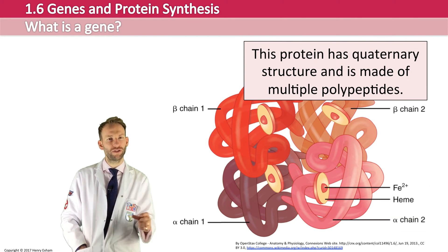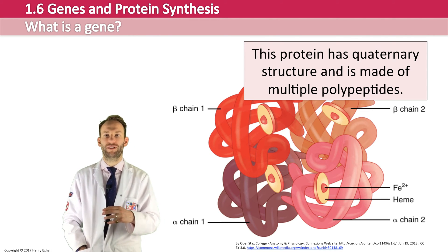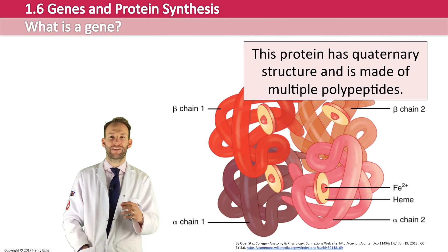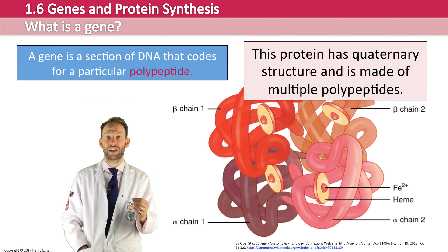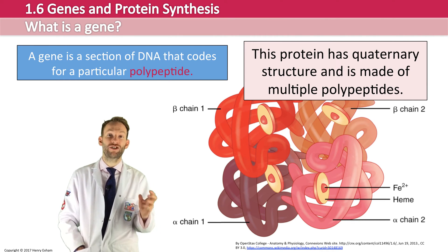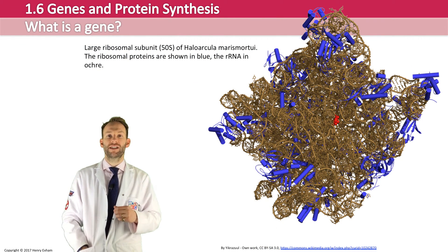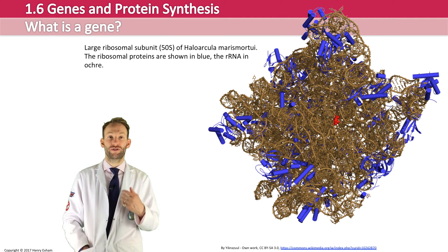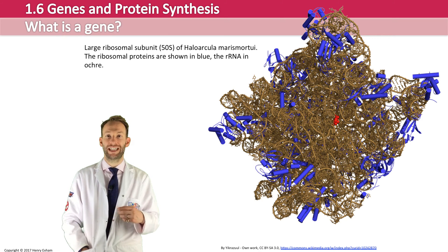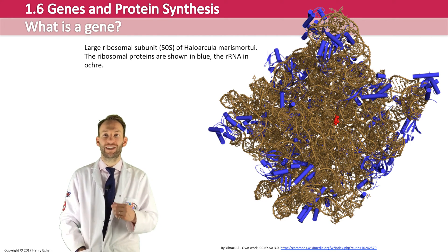Is hemoglobin coded for by one gene? No, it's not. So actually one gene doesn't code to make one protein. A better definition would be that a gene is a section of DNA that codes to make a particular polypeptide. However, genes don't always code to make polypeptides — sometimes certain genes can code to make functional or structural RNA molecules. So we need to adapt our definition: a gene is a section of DNA that codes for a particular polypeptide, or in some cases an RNA molecule.